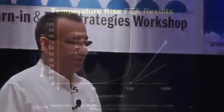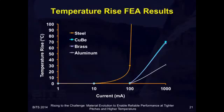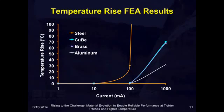If we look at the steel, after about 10 milliamps of current, you have a dramatic increase in temperature. Whereas the higher conductivity materials like the brasses, bronzes, and copper beryllium show a much lower temperature increase. This gives you an indication that if you're using a high-strength material like steel but it has no conductivity, you're going to run into significant temperature issues.